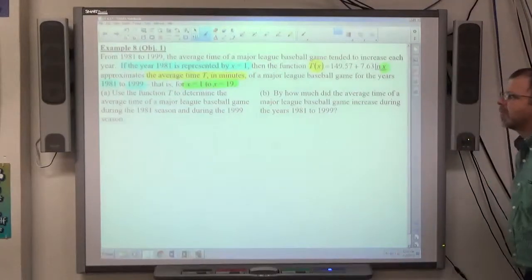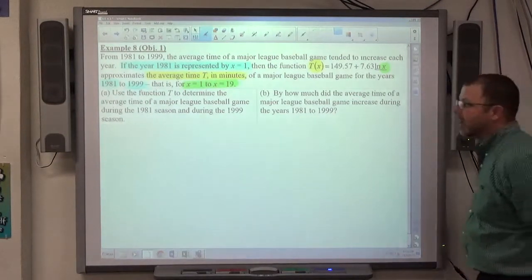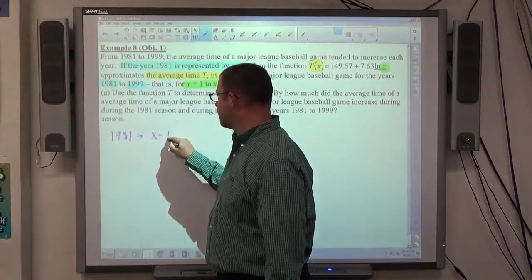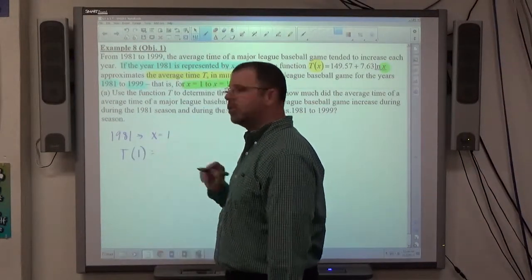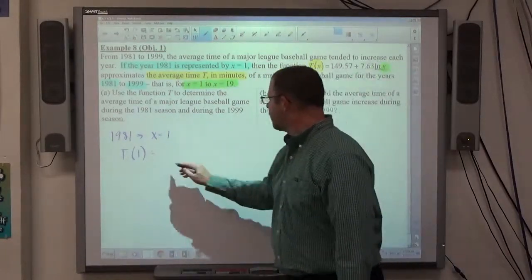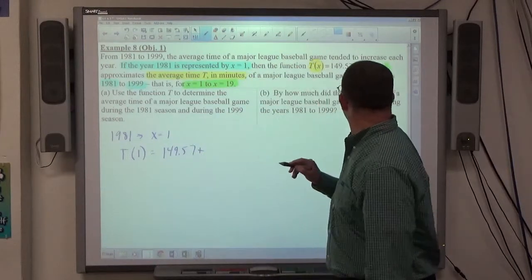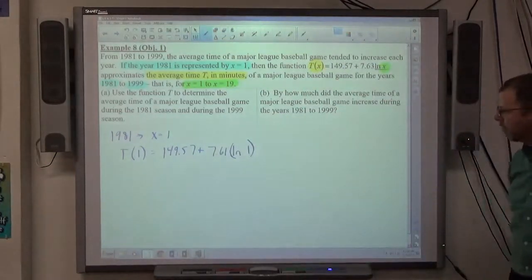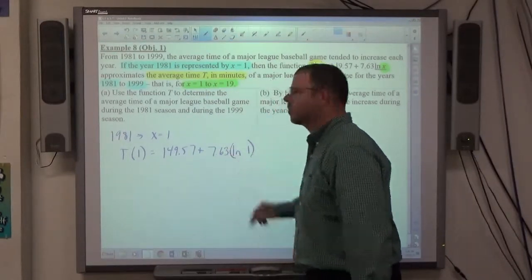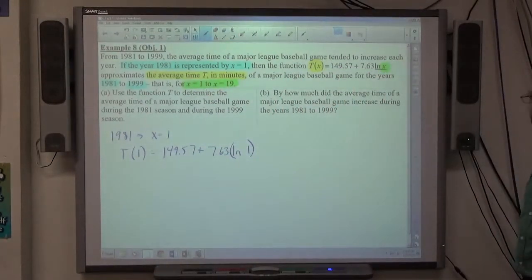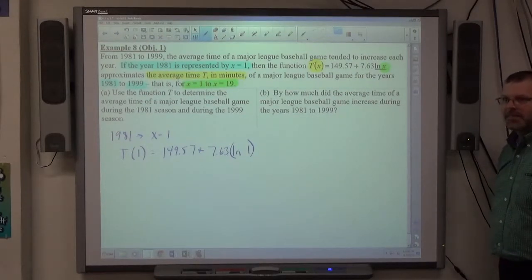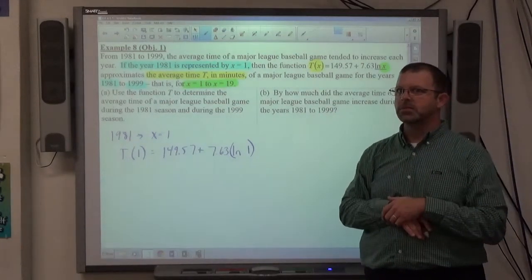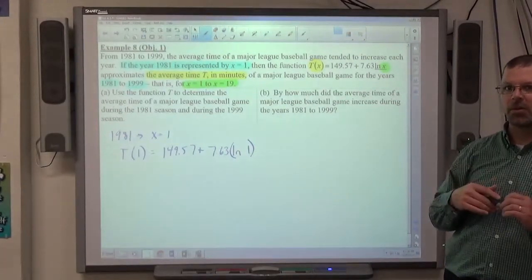Use the function t to determine the average time of a Major League Baseball game during the 1981 season and during the 1999 season. 1981, we have to establish that that means x equals 1. That means that they're asking me the average time of the game in 1981. I have to do t of 1. So I do 149.57 plus 7.63 natural log of 1. So 7.63 is being multiplied by the natural log. What's the natural log of 1 equal?